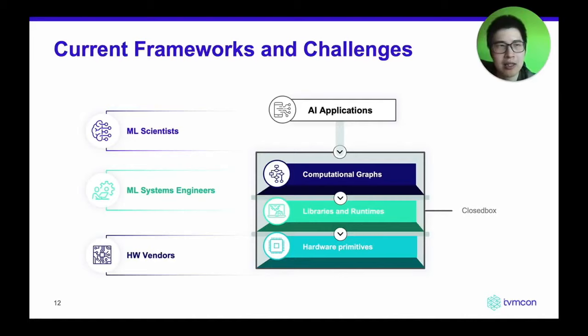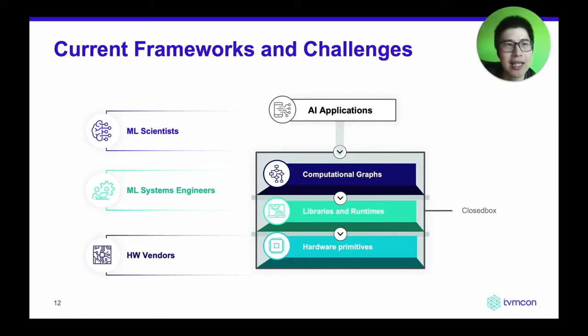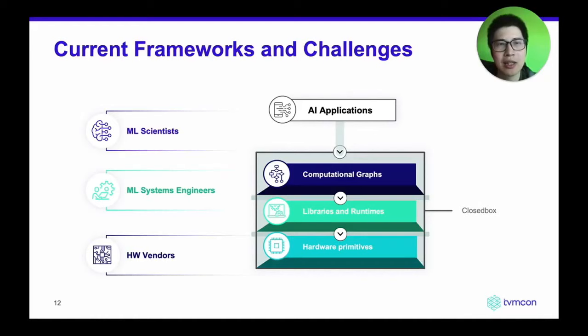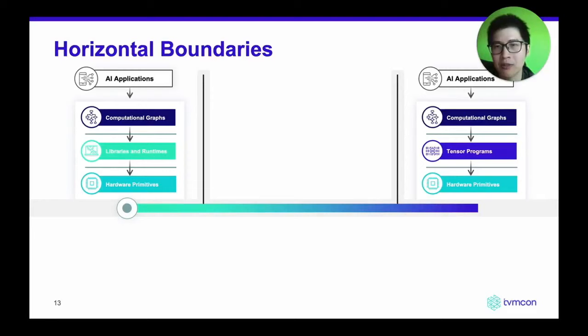If you look at current frameworks and solutions today, most current frameworks — including machine learning frameworks like TensorFlow and PyTorch, as well as compilation-driven frameworks like TVM and MLIR-based solutions — follow what we call a multi-stage lowering approach. The idea is to take solutions from each abstraction and stitch them together vertically. Models go into one abstraction like a computation graph, get a few optimizations, and feed to the next level. Another characteristic of this approach is that the solution is presented to the end user as a closed box, making it hard to inspect internally.